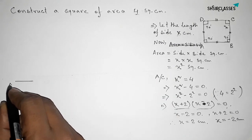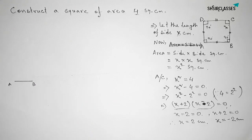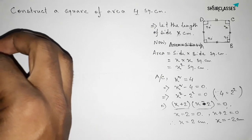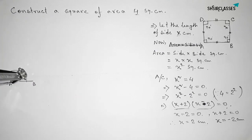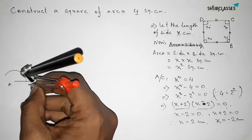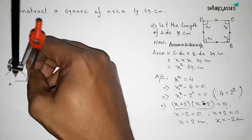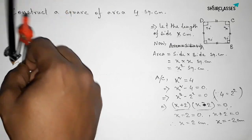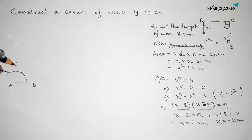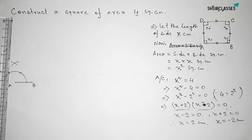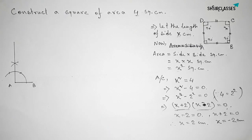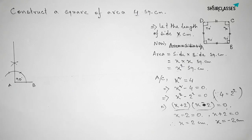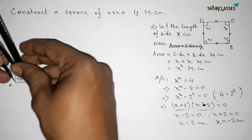Next, we have to draw a 90-degree angle at point A with the help of a compass. Putting the compass on point A and taking any length, draw an arc. Again putting the compass at that point with the same length, cut arcs and draw another arc. Repeat with the same length to get intersecting arcs, then join the line to get a 90-degree angle at A. Now take the length AB equals 2 centimeters with the compass.